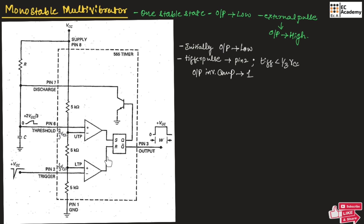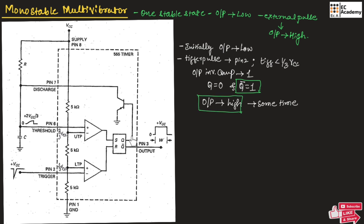If the output of the inverting comparator is high, that will reset the SR flip-flop, so Q will be equal to 0. Therefore Q-bar will be 1. Since Q-bar is taken as output, the output of the SR flip-flop will be high for some time. Since Q is equal to 0, the base of the BJT will be 0, causing the BJT to turn off and act as an open circuit. Once the BJT acts as an open circuit, the capacitor will start charging with voltage VCC.